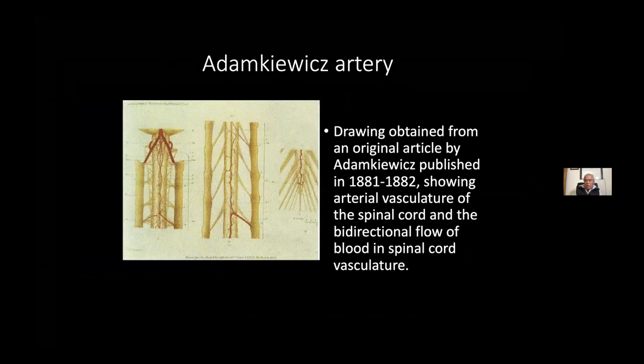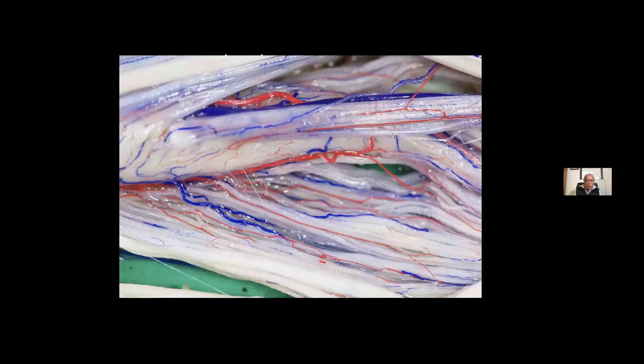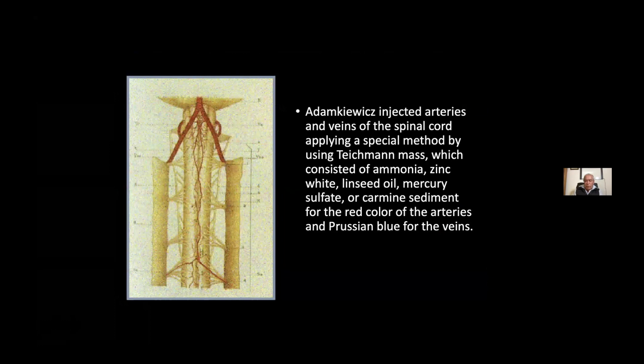This is a drawing obtained from an original article by Adamkiewicz published in 1881. This is showing the arterial vasculature of the spinal cord and the bidirectional flow of fluid. This is a picture of my research about these arteries. This is a conus medullaris and dorsal roots of a spinal cord. Adamkiewicz injected arteries and veins of the spinal cord, applying a special method.